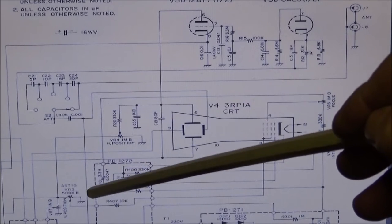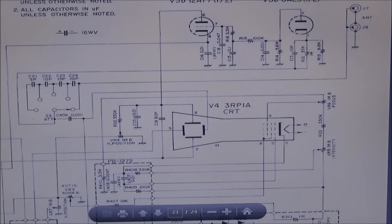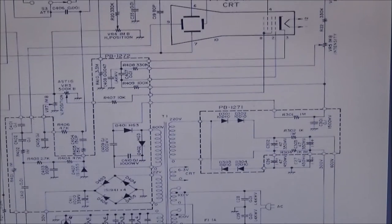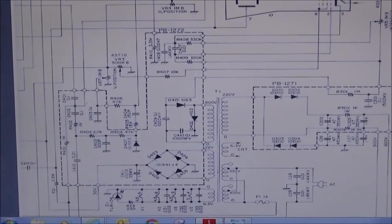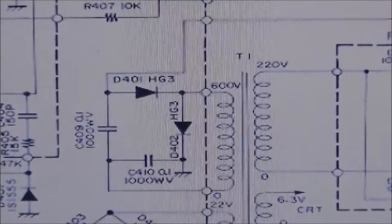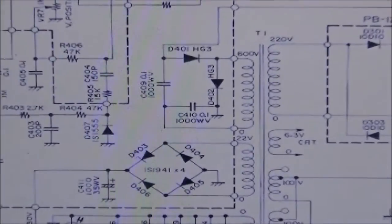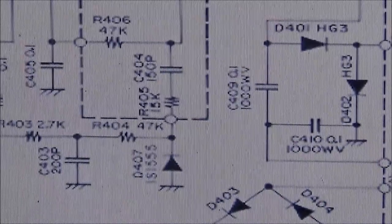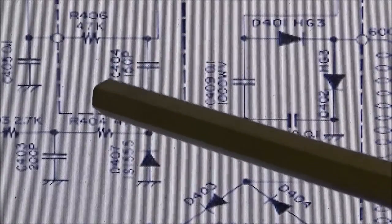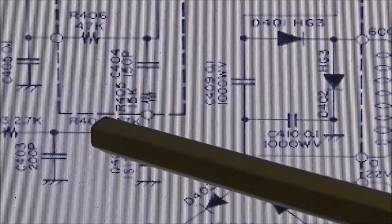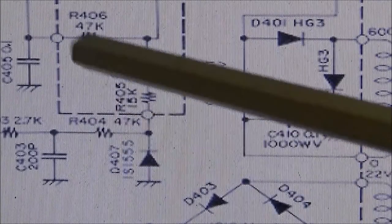So what we need to do is follow this point down. Here when it comes down we can see that there's a 47k resistor here and another 47k resistor here. So this should be our burnt resistor, should be one of these two 47k resistors.